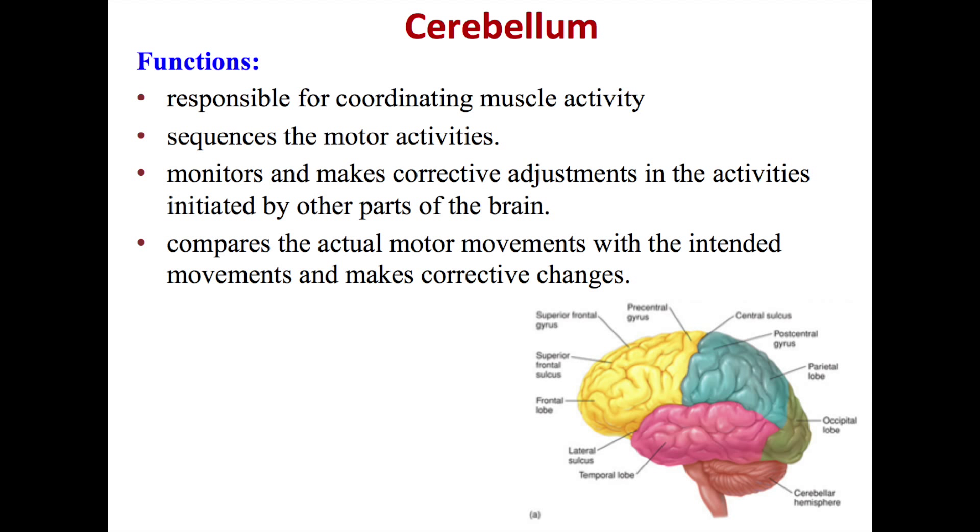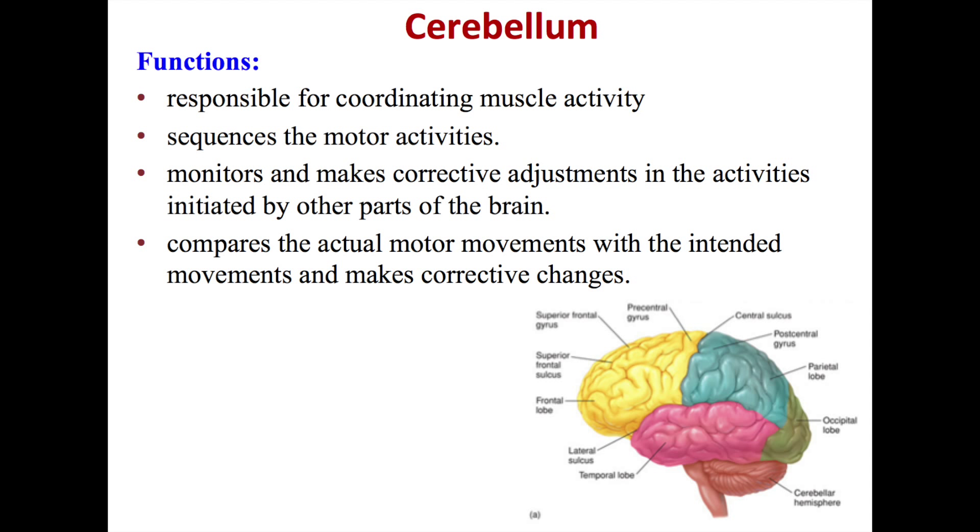The cerebellum is responsible for a number of functions. It's responsible for coordinating muscle activity, sequencing the motor activities, monitoring and making corrective adjustments in activities initiated by other parts of the brain, and comparing the actual motor movements with the intended movements and making corrective changes.